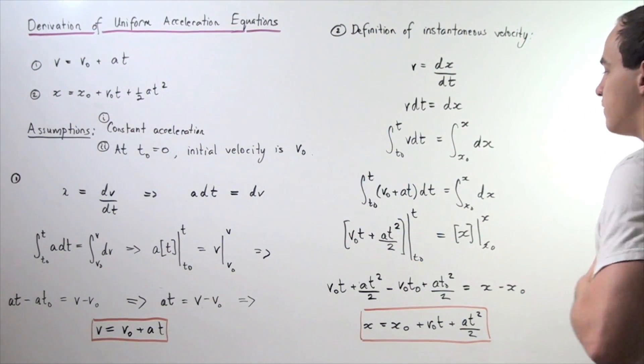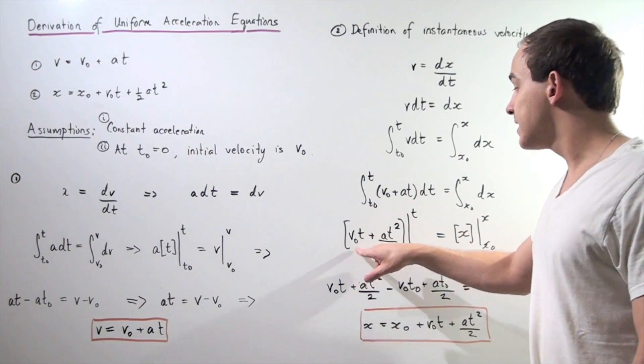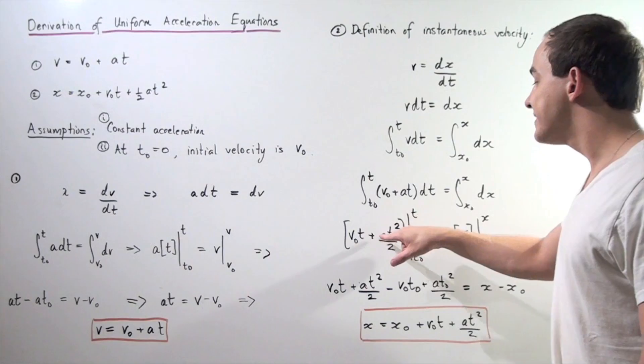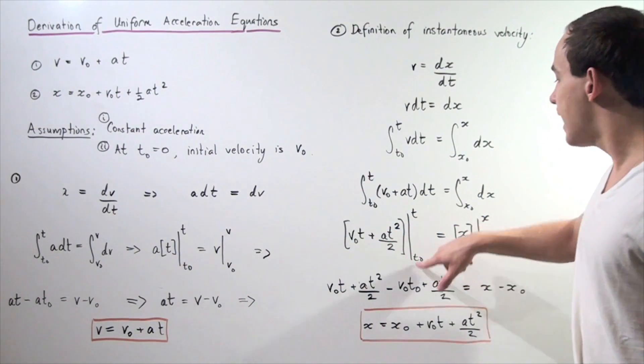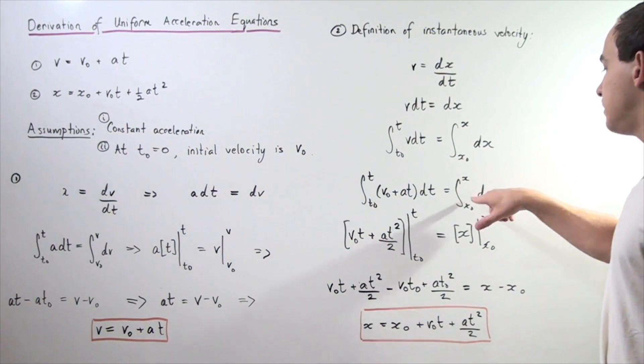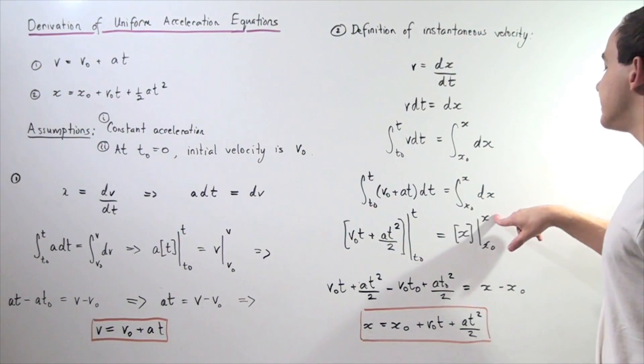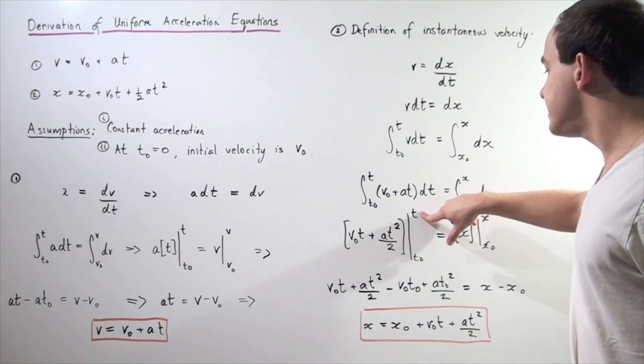we get the following result. Our v-naught times t plus a times t squared divided by 2, and we take it from t-naught to t. And likewise, there's a 1 here so that simply becomes an x and we take it from x-naught to x final. Let's distribute this t-naught and t,